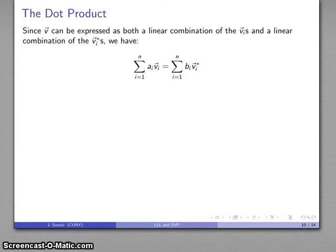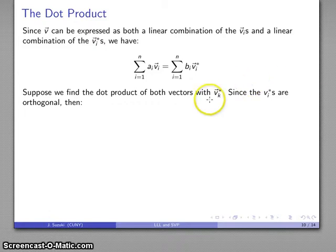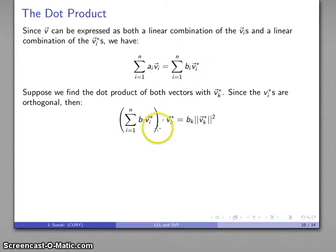What I'm going to do is take advantage of the fact that the dot product will help us isolate one of the coefficients. If I dot both expressions with some Gram-Schmidt basis vector, because the Gram-Schmidt basis vectors are orthogonal, most of the dot products on the right-hand side are going to go away. The only one I'll be left with is the dot product of v_k* with v_k*, which gives the magnitude squared of v_k*.